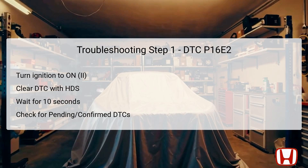To start troubleshooting DTC P16E2, first turn the ignition switch to the ON position (ON II), which ensures that the vehicle's electrical systems are active while avoiding engine cranking. Next, utilize the Honda Diagnostic System (HDS) to clear the displayed DTC. It is important to wait a full 10 seconds after clearing the DTC to allow the system time to reset properly. Following this, check for any pending or confirmed DTCs again using the HDS. If the P16E2 code appears again, it is indicative of a persistent issue. Conversely, if it doesn't show, there may be an intermittent fault that warrants further inspection of the connections and terminals.